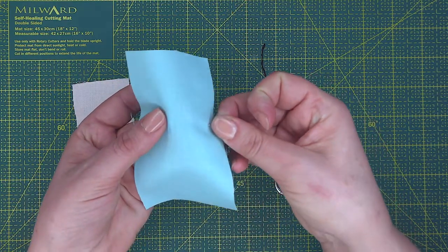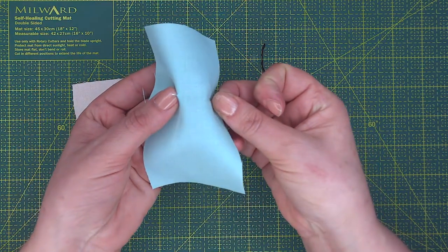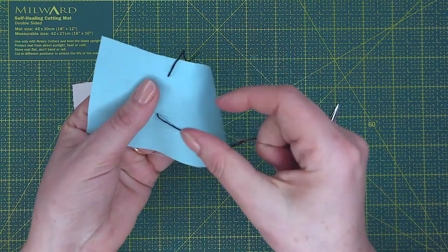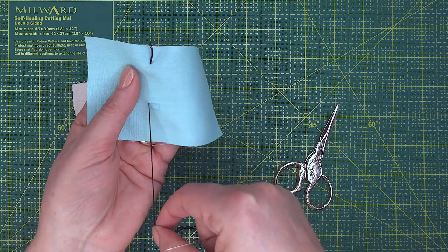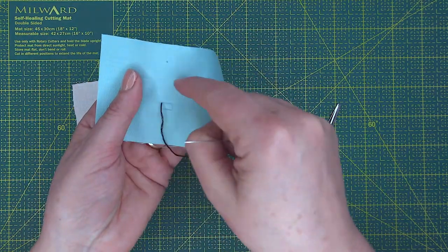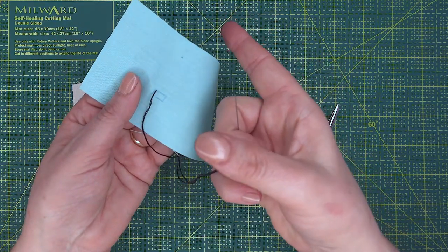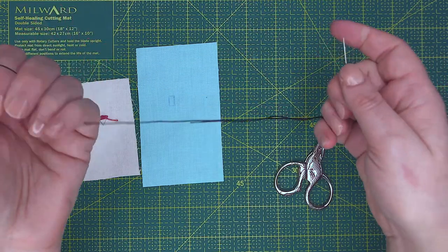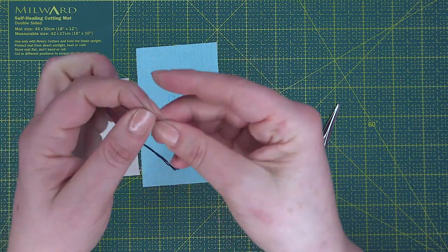Pull it through and what that would actually do is embed that actual thread inside the head of the doll. That's only if you're doing it that way. If you're going to do it flat like this I'm actually going to start with a knot in the thread.